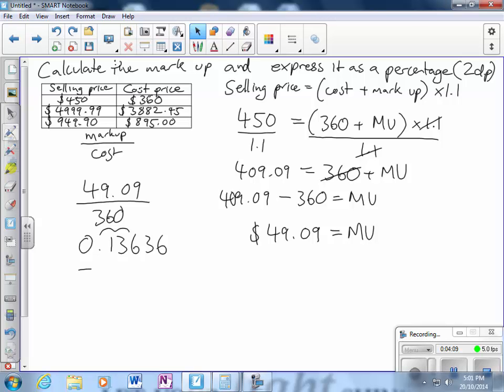So that equals 13.636%. It's asking for the answer to two decimal places. So you'll note I actually wrote down 13636, I didn't stop at the three because I knew that I'd have to round this off. So that equals 13.64%.